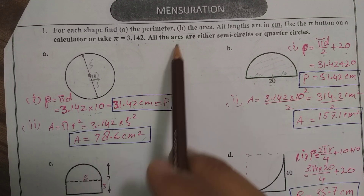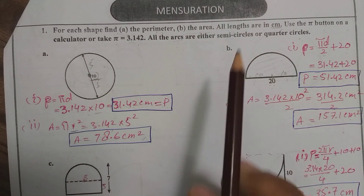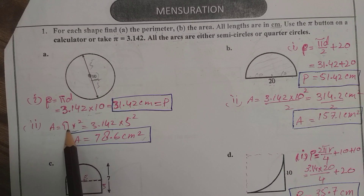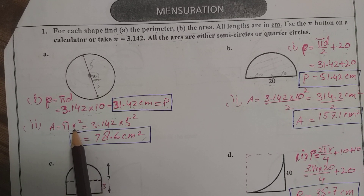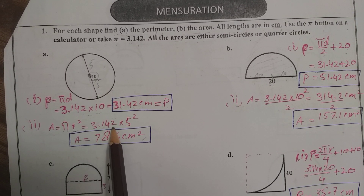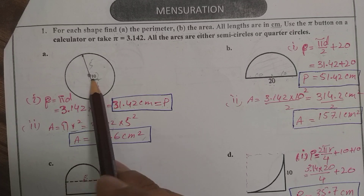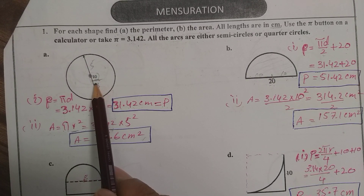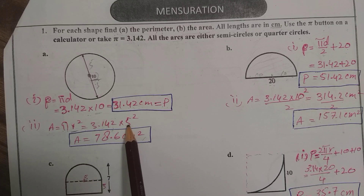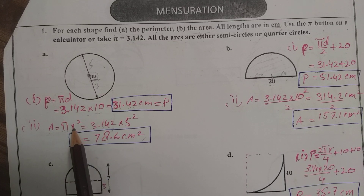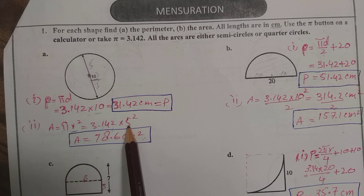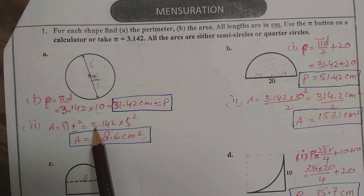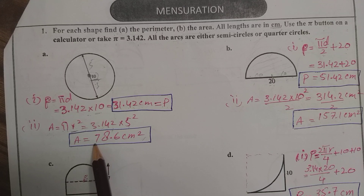We also need to find the area of the circle. The formula is area equals pi r squared, which equals 3.142 times r squared. Since the diameter is 10, we divide by 2 to get radius equals 5. Then 5 squared equals 25, and 25 multiplied by 3.142 gives the answer 78.6 centimeters squared.